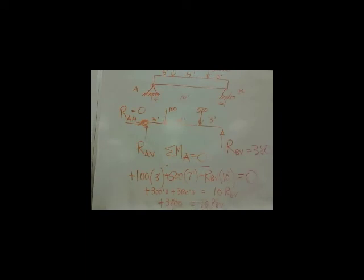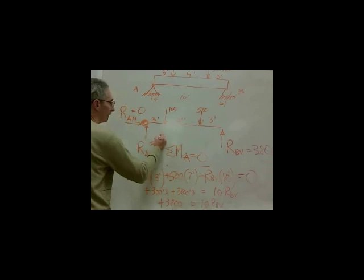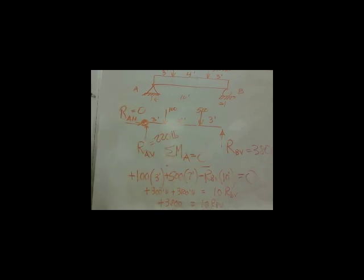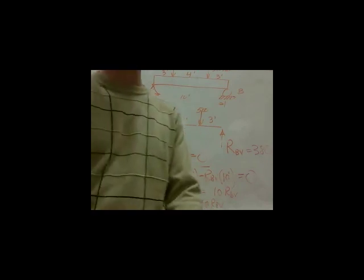What can I do with that answer? Plug it back into Y. R, A, V plus R, B, V equals 600. I just found R, B, V is 380. Now I've got R, A, V plus 380 is equal to 600. R, A, V is going to come out to be what? 220 pounds. That's your answer.